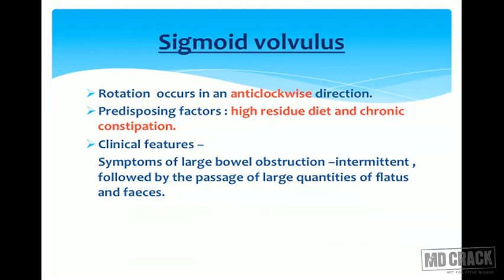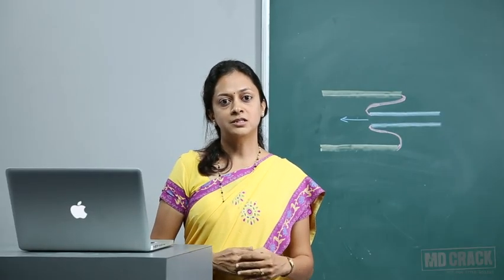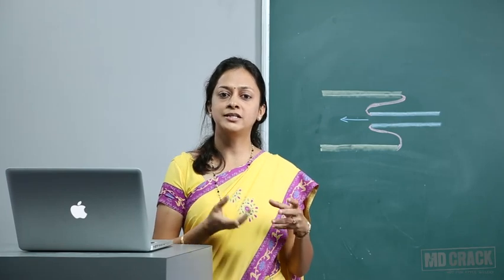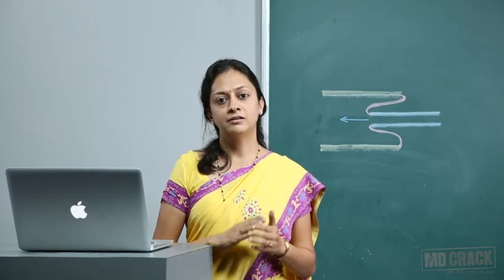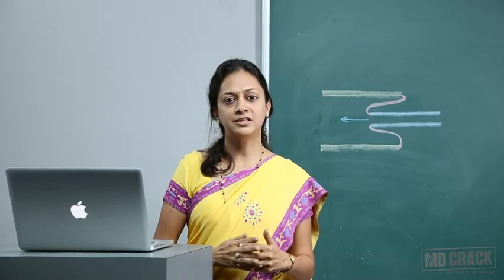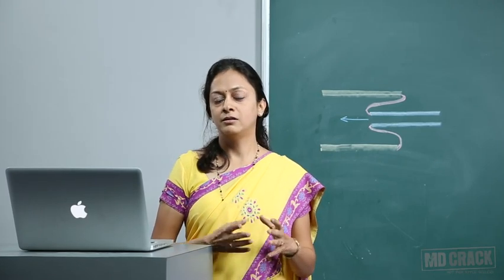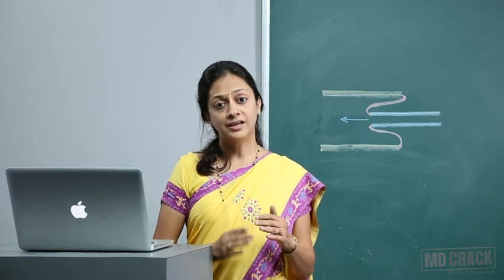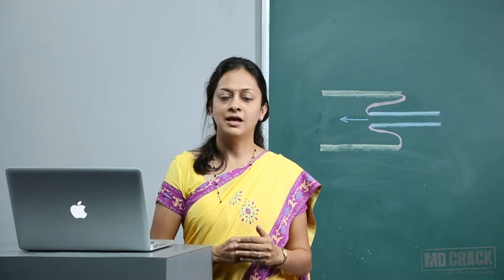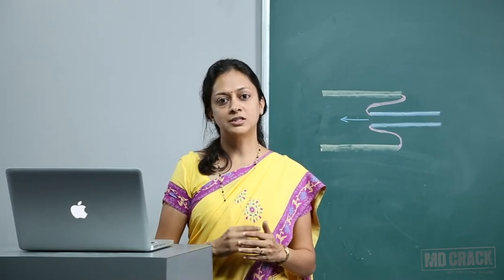Sigmoid volvulus is commonly seen. Rotation occurs in the anti-clockwise direction. Predisposing factors can be high residue diet and chronic constipation. Clinical symptoms are the same as large bowel obstruction, but they are intermittent — sometimes the volvulus gets derotated and the patient passes large amounts of flatus and feces and becomes normal, then develops the same symptoms again after some days.